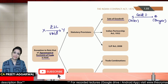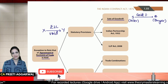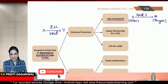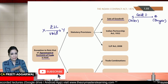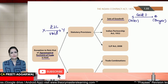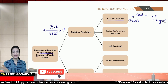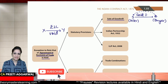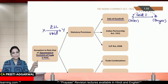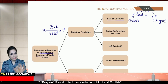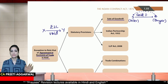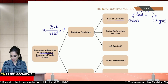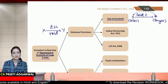Buyer bolta hai seller ko: dekh seller, agar tu aisa hi business ye area mein start karega, toh phir mere paas koon aayega? Sab tujhe jantey hai, sab tere paas hi aayenge na. Agar main tera business khariid raha hoon, tere goodwill ke saath khariid raha hoon, tere customers mere paas aane chahiye na. Tuh same similar business yahaan par karega, toh mere paas koon aayega? Please, at least ye area mein tuh business mat karna. So buyer thodi si restriction daal deta hai on the seller and tells the seller not to carry on similar business in a particular locality. Locality reasonable honi chahiye — aisa nahi hona chahiye ki you cannot carry on business anywhere forever in India. Voh nahi chalega. Thodha restriction hai, lekin valid hai.